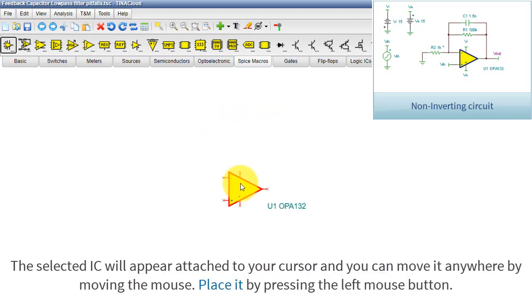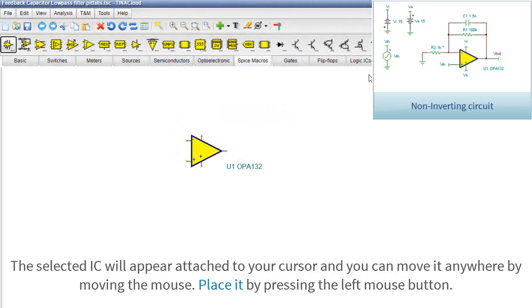The selected IC will appear attached to your cursor and you can move it anywhere by moving the mouse. Place it by pressing the left mouse button.